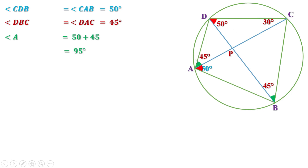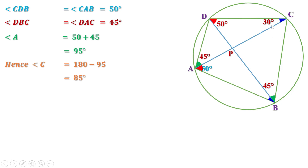We know ABCD is a cyclic quadrilateral, therefore the opposite angles are supplementary. Since angle A is 95 degrees, angle C is 180 minus 95 degrees, or 85 degrees. Now these two angles are made by arc DA on its alternate arc, so they are equal. Since this angle is 30 degrees, this angle is also equal to 30 degrees. That is, angle DCA equal to angle DBA equal to 30 degrees.